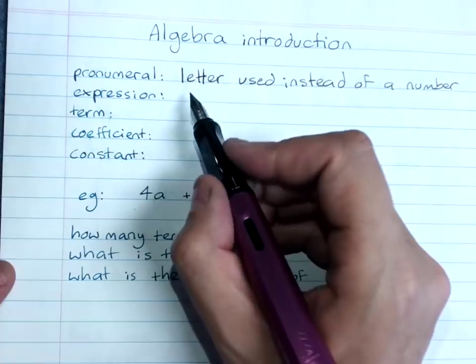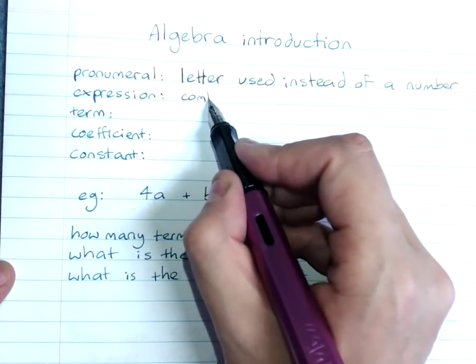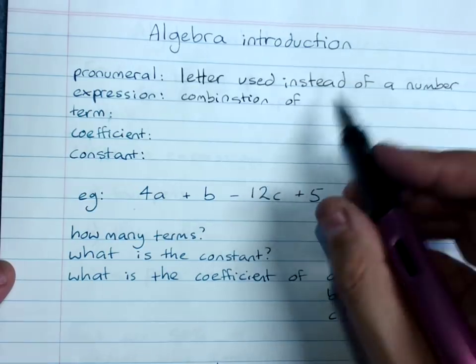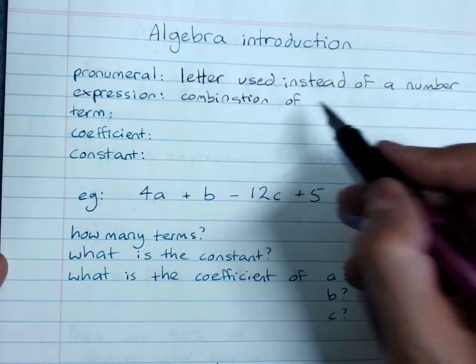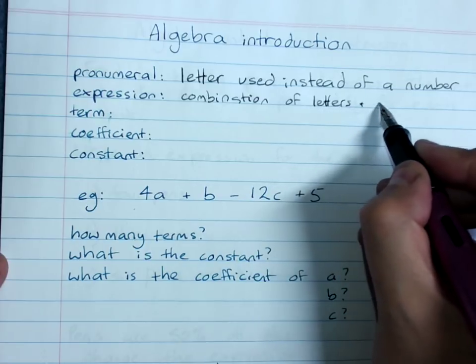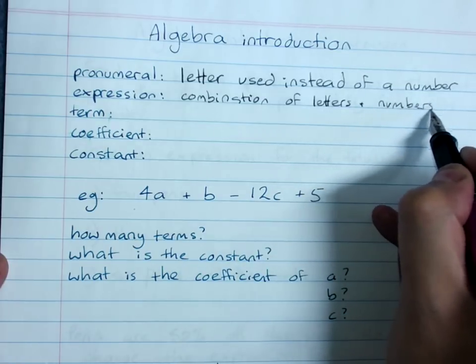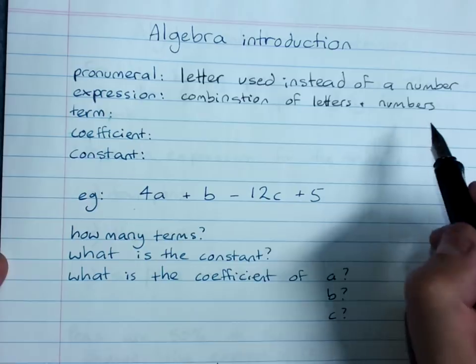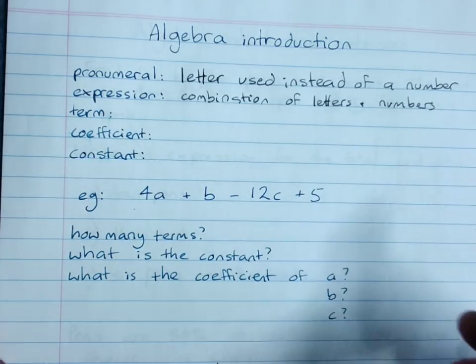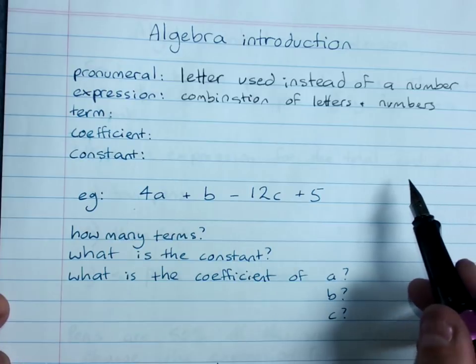An expression is a combination of algebraic terms, that is, letters and numbers. Added and subtracted and multiplied and divided, but no equal sign. If it's got an equal sign, it's going to be an equation instead.